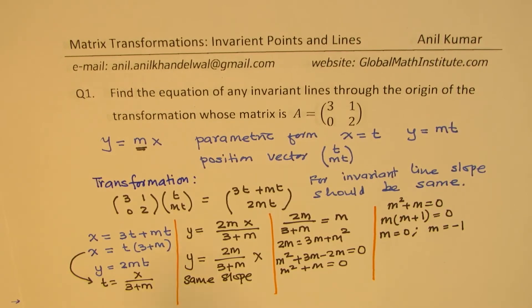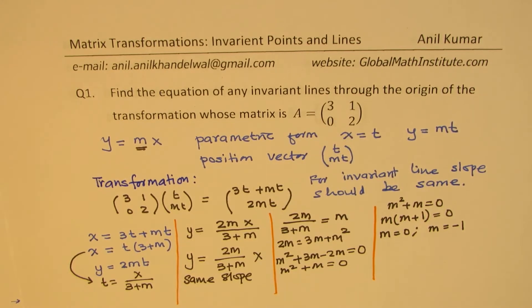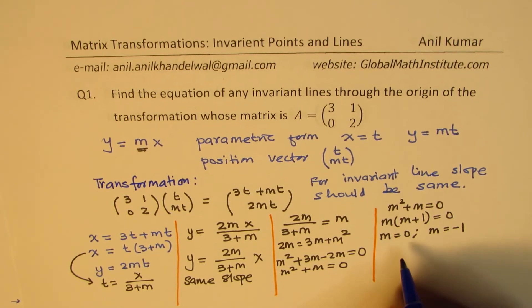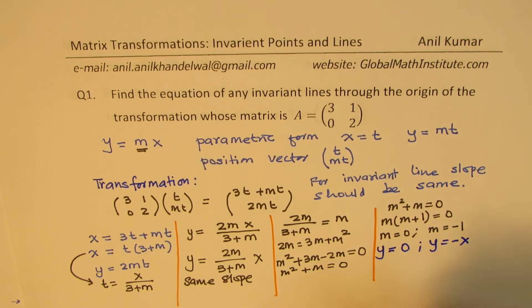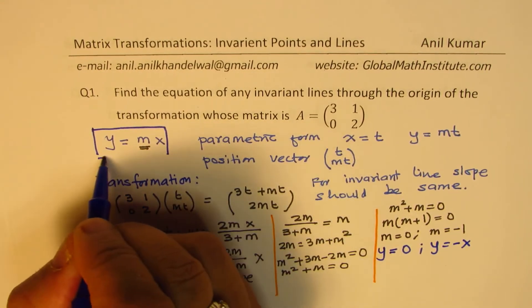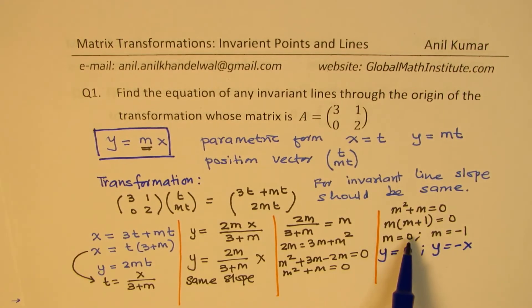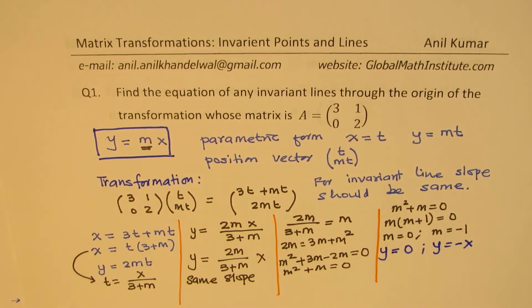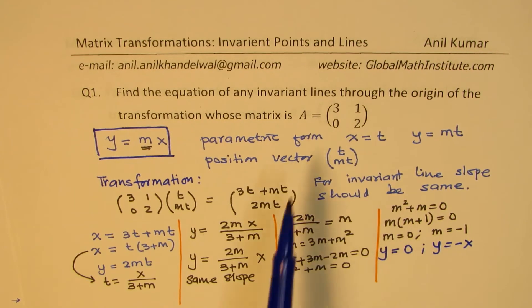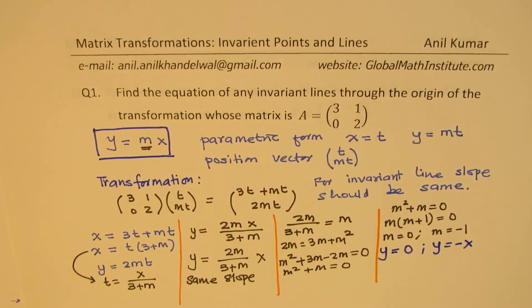So those become the equations of our invariant lines for the given transformation. We have two equations: when M is 0, we get Y equals 0, and when M equals minus 1, we get Y equals minus X. Substituting into Y equals MX, we confirm these two lines are invariant for the given transformation.